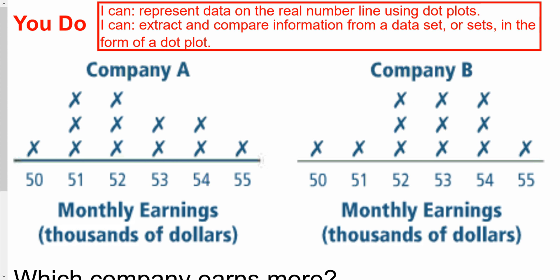Alright, now take a look at these two companies — Company A and Company B — and their monthly earnings in thousands of dollars. Company A shows $50,000, $51,000, $52,000, and so on. Which company seems to be doing better? Go ahead and pause the video, find the mean and the median of each dataset, compare them, and then we'll see what you get.